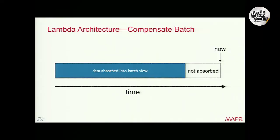The speed layer essentially compensates for the latency of the batch layer. So the batch layer might run once a day or every two hours. All the data that has arrived between the last run and now — which has not been absorbed into the master dataset — is served by the speed layer.